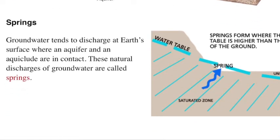Springs occur any time groundwater is exposed to the surface. If you have the water table above the surface, that's a spring. Sometimes springs come out like a flowing fountain; other times they just seep out like a wet spot on your property. These discharges of water are called springs, and you can have a couple of different types.